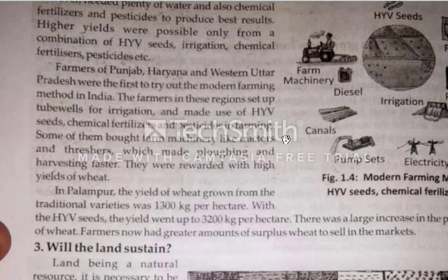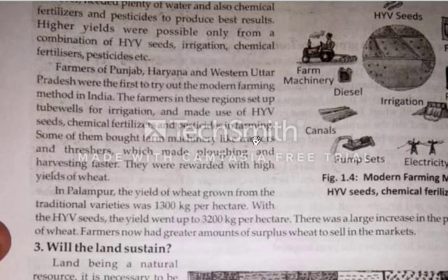For the first time at these three places, farmers set up tube wells for irrigation and made use of HYV seeds, chemical fertilizers, and pesticides in their farming.